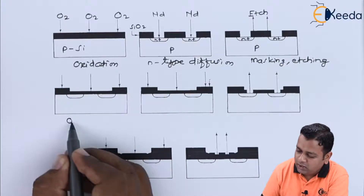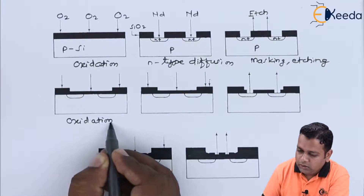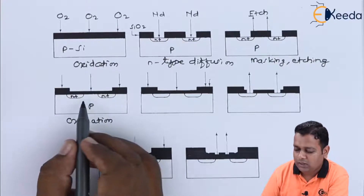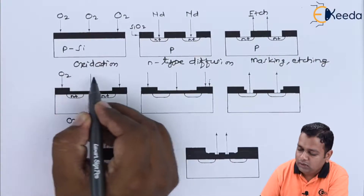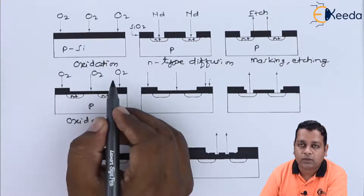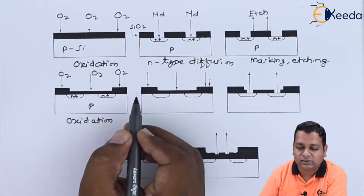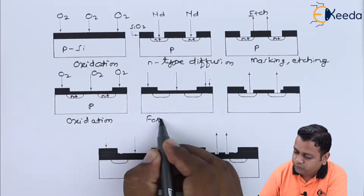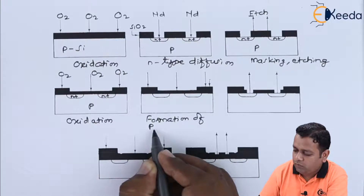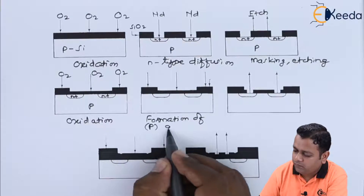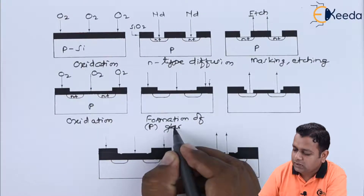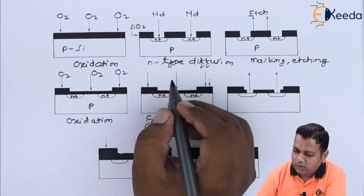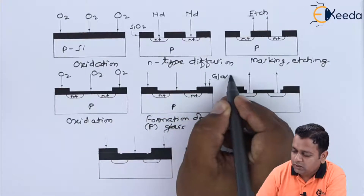The next step is again oxidation, where N-positive regions at two areas and the P-type material undergo bombardment with O2, forming an SiO2 layer. Following that, there is formation of phosphorus glass, represented by capital P, over the P-type material and N-positive regions.